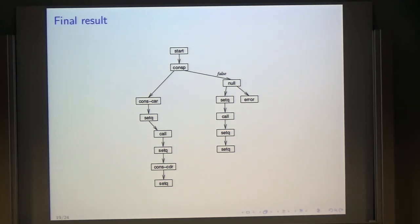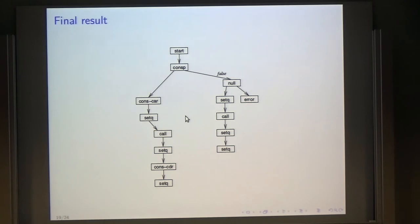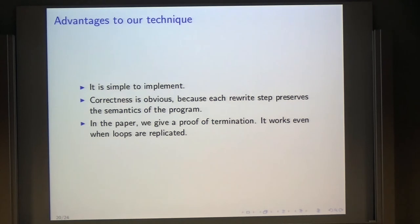This is the final result. As you can see, you have a single test for cons-p, and you have the replicated version of the middle binding here — seq here, seq here. This works for arbitrary code; we've proven in the paper that it works even if the middle code is looped. The advantages: very simple to implement. Correctness is obvious because with graph rewriting you just make sure semantics are preserved in each rewrite rule. The paper contains a proof, which was not trivial but nothing very complex either. We also prove that it terminates.